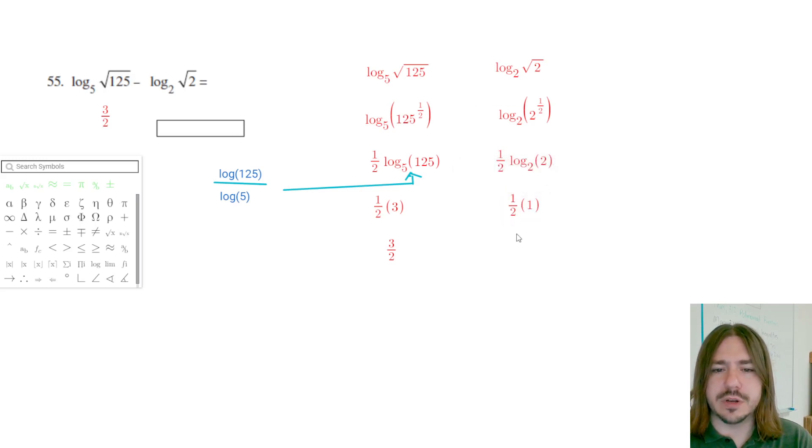Now 1 half times 1 is just 1 half. If you wanted to type this in the calculator, it would be kind of, you'd set it up like this, using the change of base formula. And you'd write it as log 2 divided by log 2, which obviously is 1 because anything divided by itself is 1. So this is 1 half.